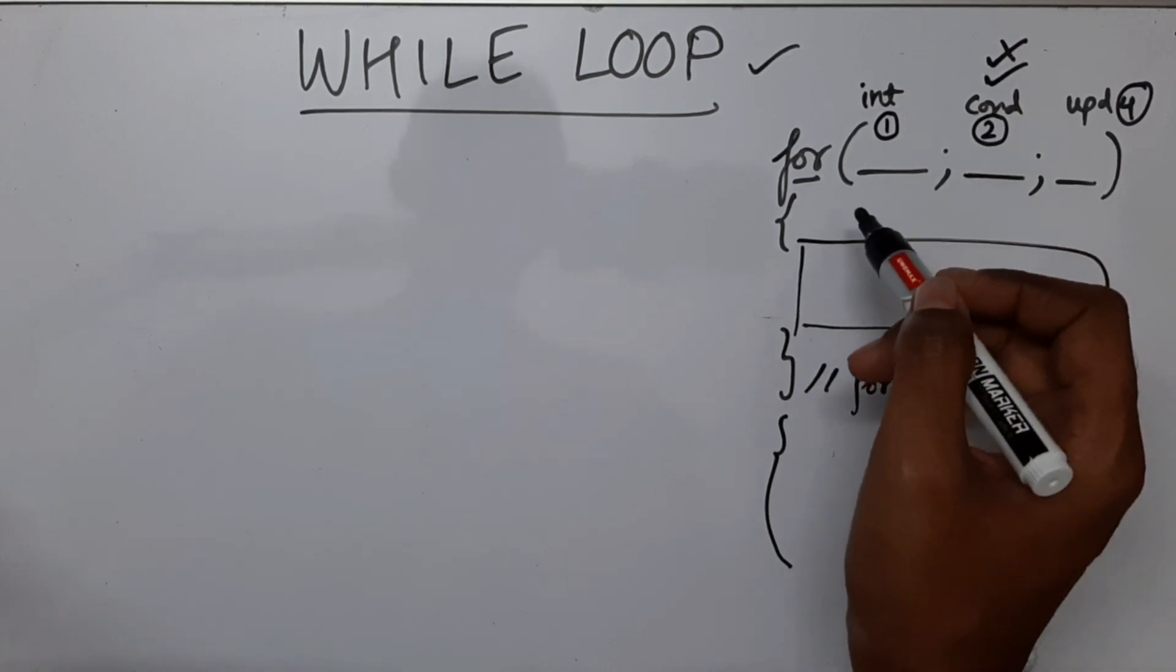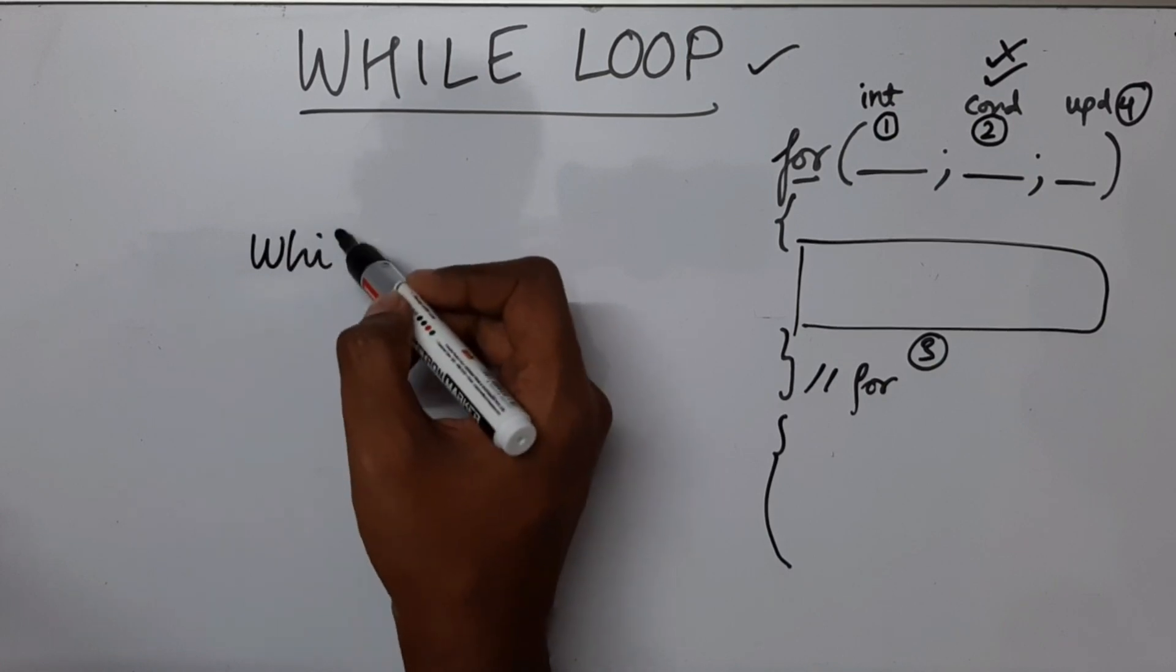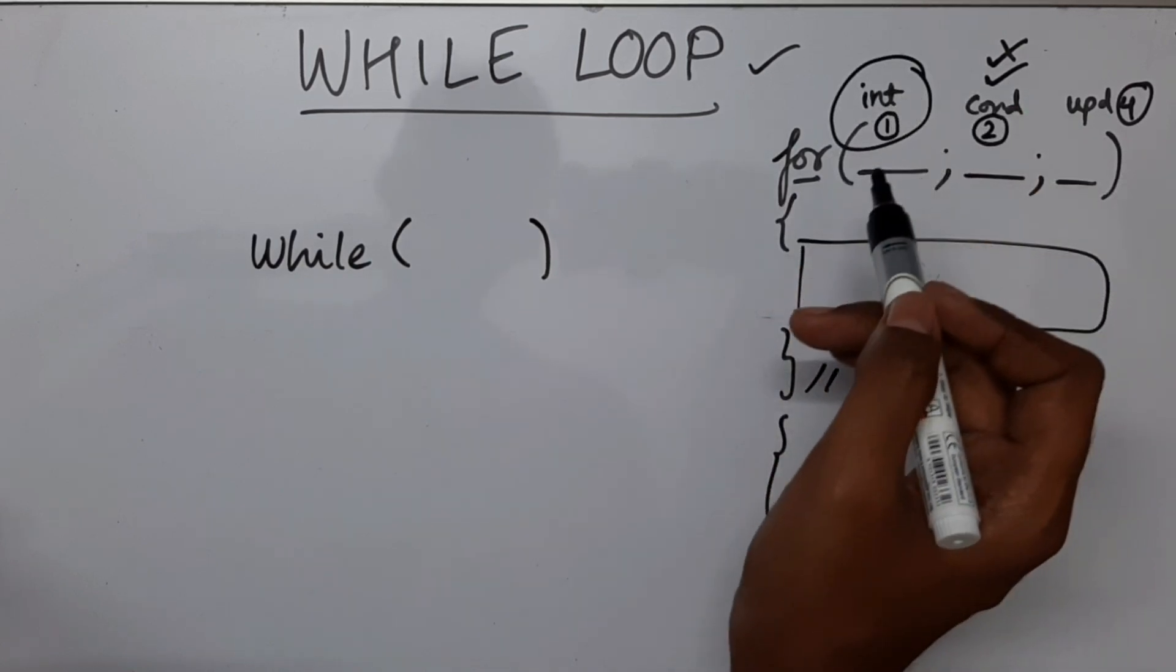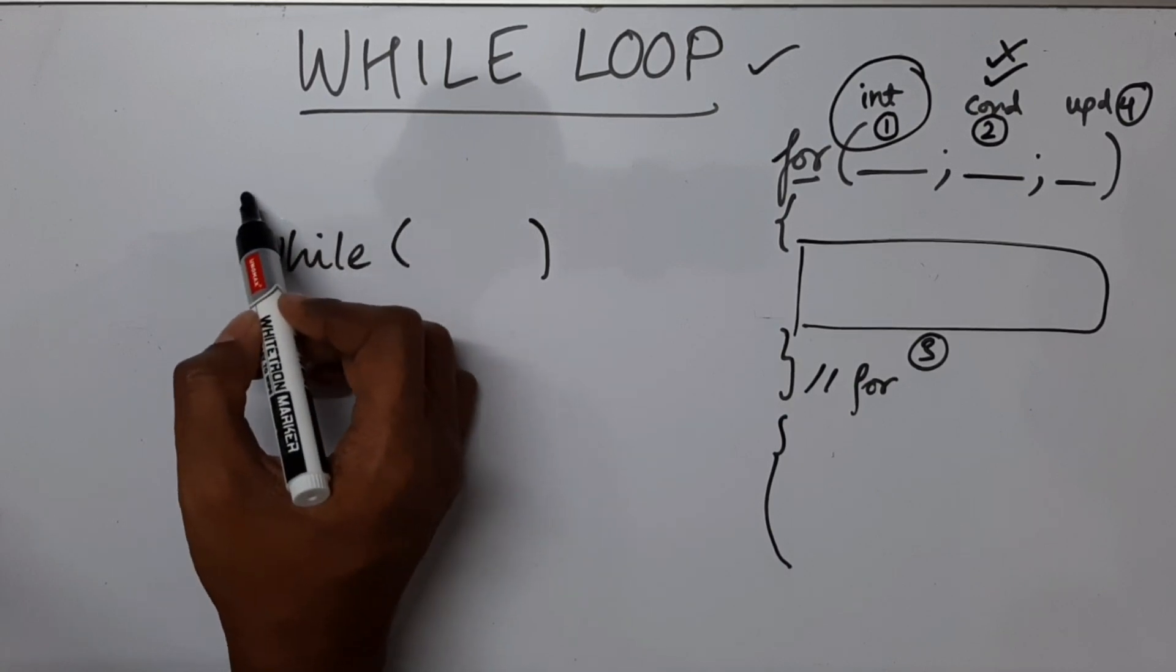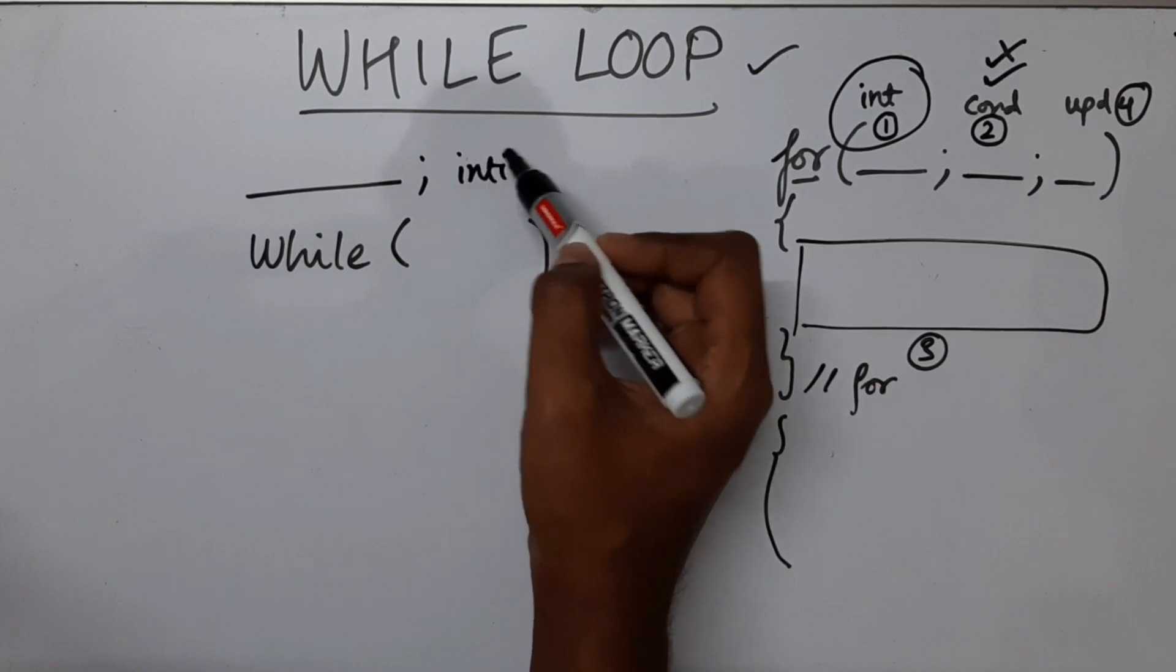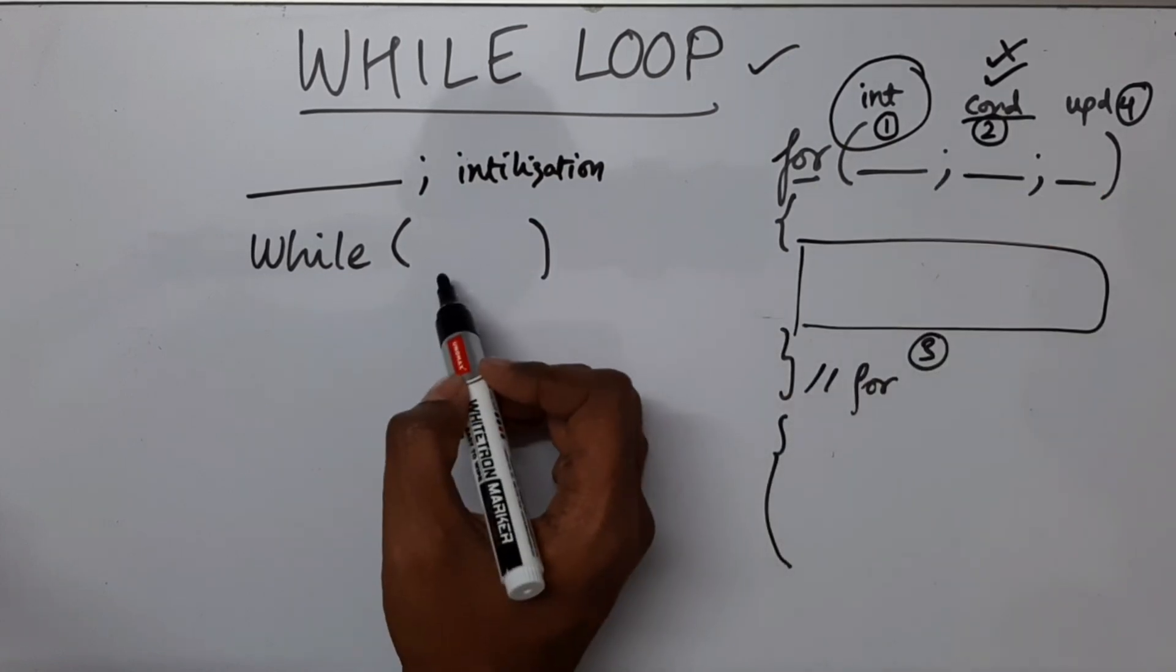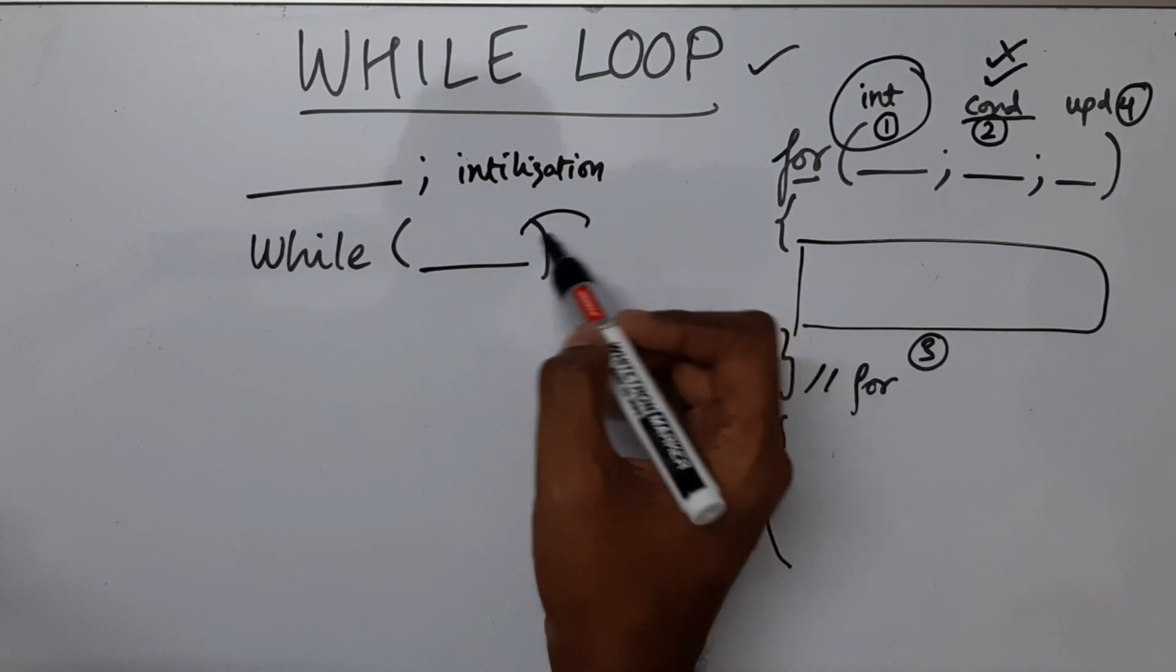So the same thing we are going to use it for while. So the keyword is while, we have opening and closing brackets. So this initialization part, where we are going to put this, we are going to put it before while. So we are going to initialize over here. So this is the initialization part. So where is the condition in while? The condition will come over here. So this is condition.